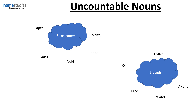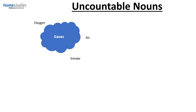Also, coffee, oil, juice, water, and alcohol are uncountable nouns. Additionally, gases are uncountable — things like nitrogen, hydrogen, oxygen, air and smoke are uncountable.